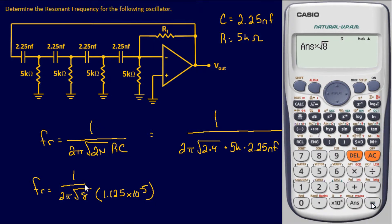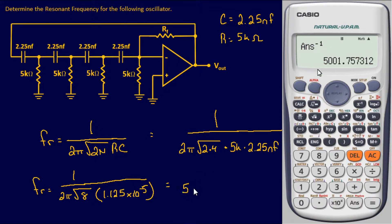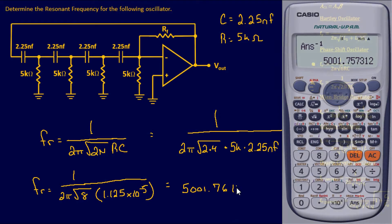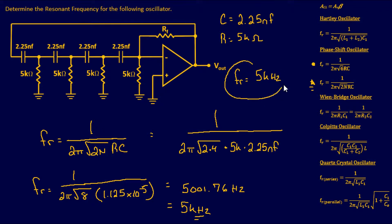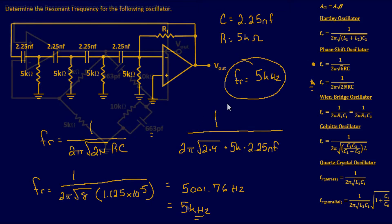Plugging the remaining values into the calculator gives 5001.76 Hz, which we round to approximately 5 kilohertz. So the final answer: the resonant frequency is 5 kHz.